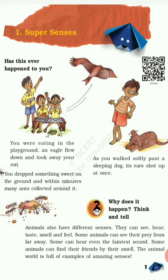Sense organs are the organs which help us to know and understand the world around us. We have basically five sense organs: ears, tongue, eyes, nose, and skin. We use our ears to hear, tongue to taste, eyes to see, nose to smell, and skin to touch or feel.